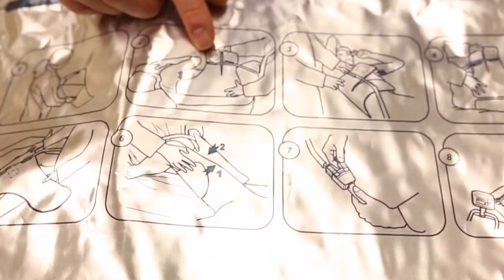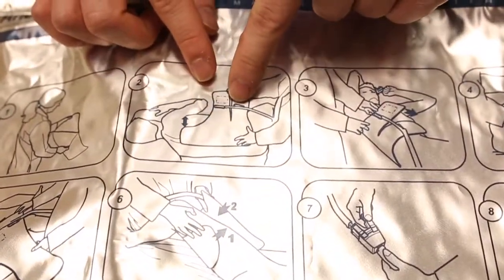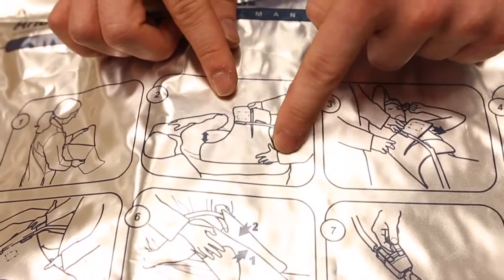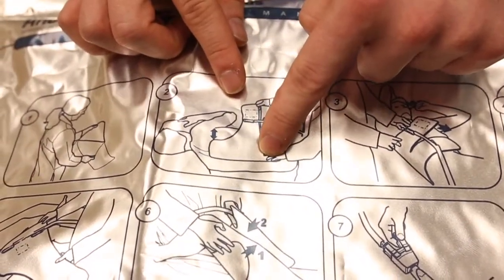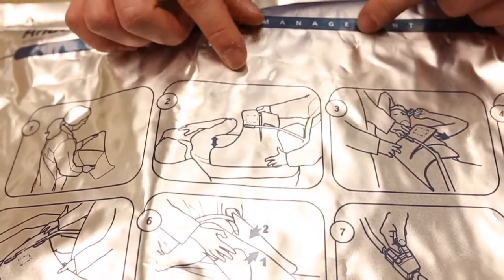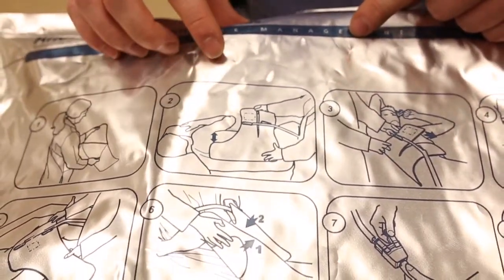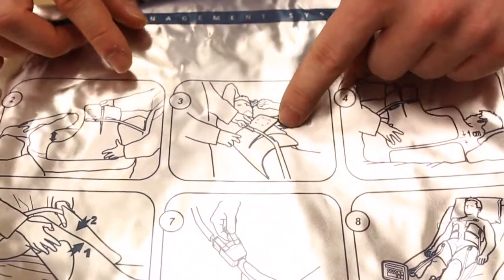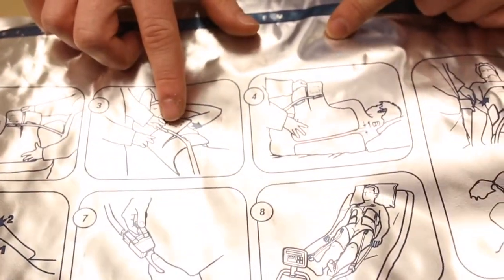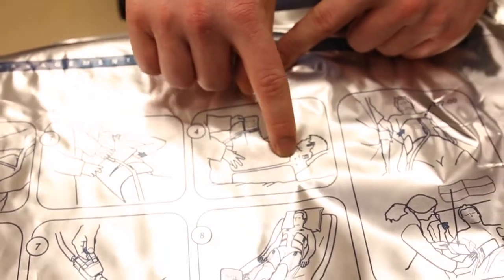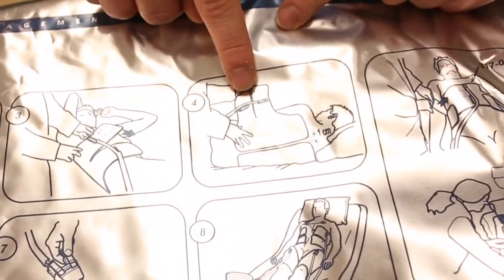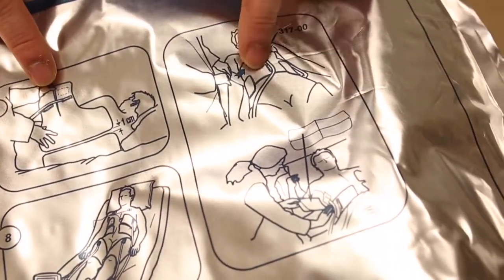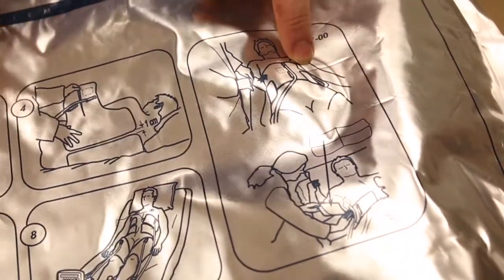The back and chest pads go on first. Roll your patient, put the larger side there - there will be instructions directly on each pad showing which side and where they go. Then roll them back over and put the pads on here. You want one centimeter between the pads on the back as indicated, and this is what it'll look like on the front.